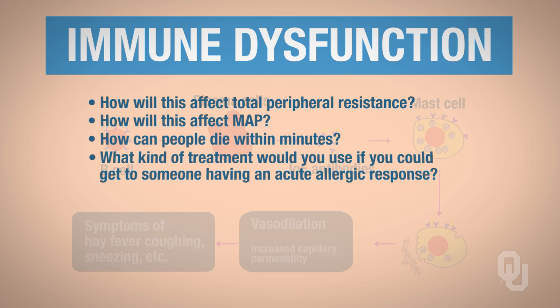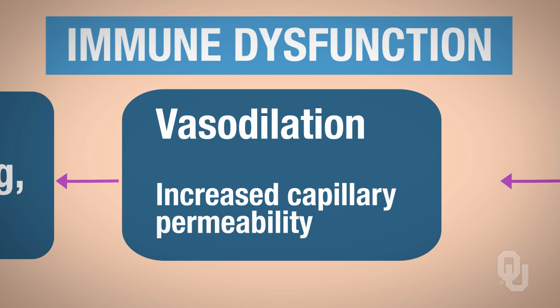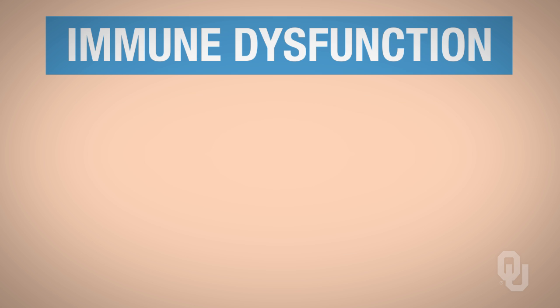Then think about what kind of treatment — if you could get to somebody in time who was having an acute allergic response, what would you inject them with that would help alleviate these symptoms and prevent their death? Going back to the acute allergic response, when you vasodilate and have increased capillary permeability, that's going to ultimately cause symptoms like hay fever, coughing, and sneezing. So those are just the immune dysfunctions.